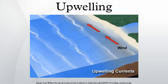Ekman transport causes the surface layer of water to move at about a 45 degree angle from the direction of the wind, and the friction between that layer and the layer beneath it causes the successive layers to move in the same direction. This results in a spiral of water movement down the water column. Then, it is the Coriolis forces that dictate which way the water will move.